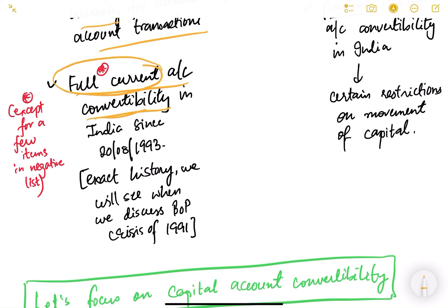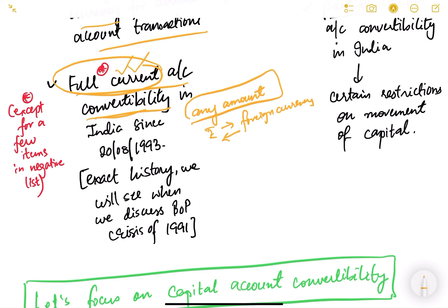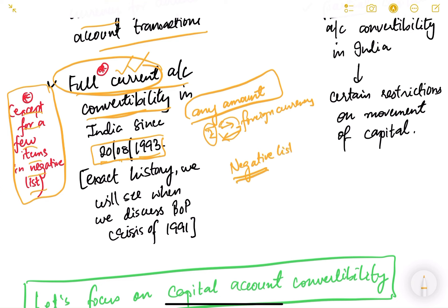In India there is full current account convertibility, meaning you can convert any amount from rupee to foreign currency and also from foreign currency to rupee — any amount is allowed, there is no restriction. RBI does not have any restriction on conversion of rupee into foreign currency or vice versa for current account transactions. This has been in force since August 20, 1993, except for a few items in the negative list where there is a prohibition on conversion.